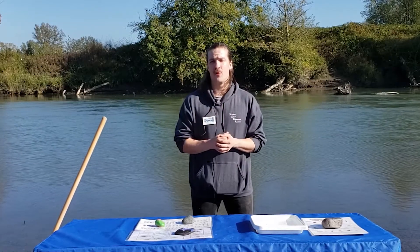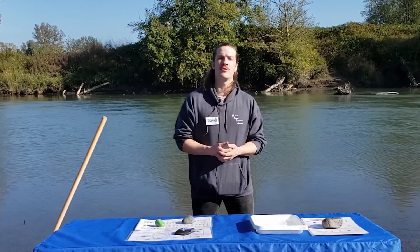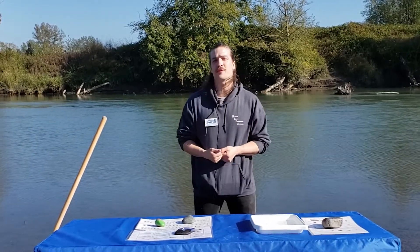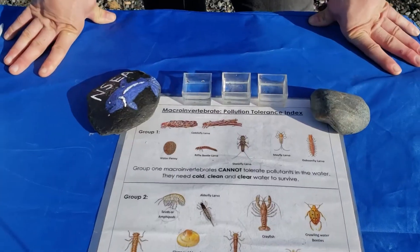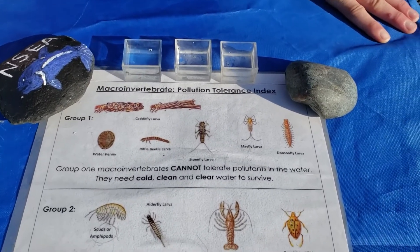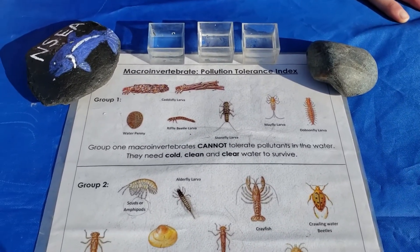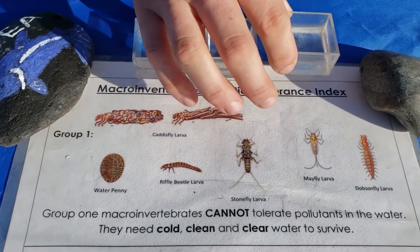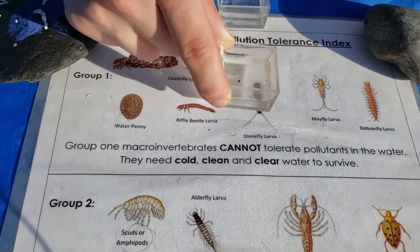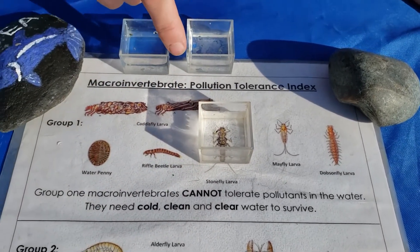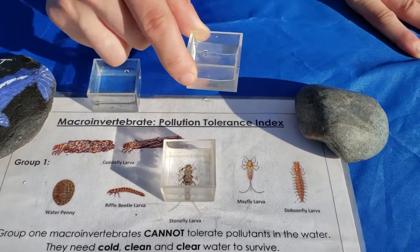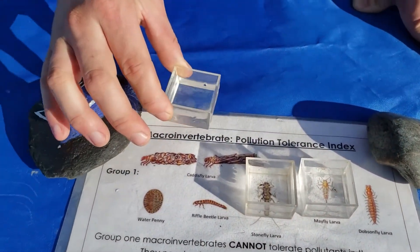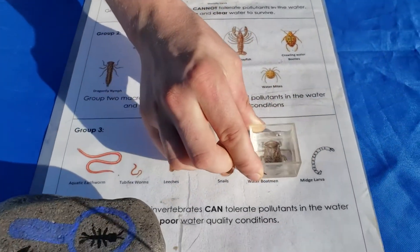Knowing how much pollution there is in the water is an important part of knowing whether the water here is cold, clean, and clear enough for salmon in the Nooksack River to survive. This is a macroinvertebrate pollution tolerance index, and it shows which macroinvertebrates are in which pollution tolerance group. The first macroinvertebrate we caught was a stonefly — it's in group one. The second was a mayfly — also in group one. The third was a water boatman, and that's all the way down in group three.